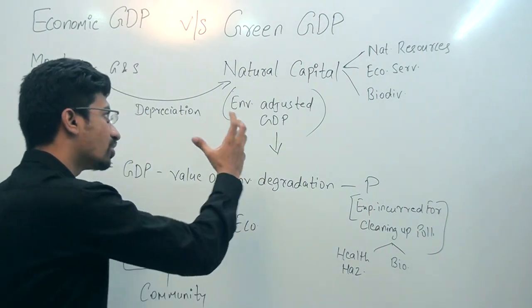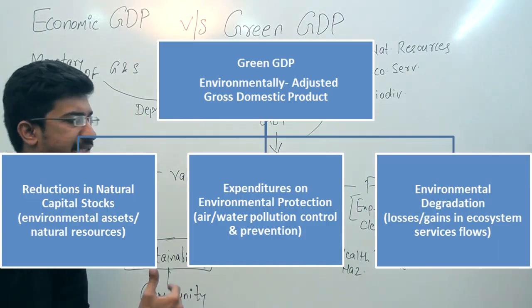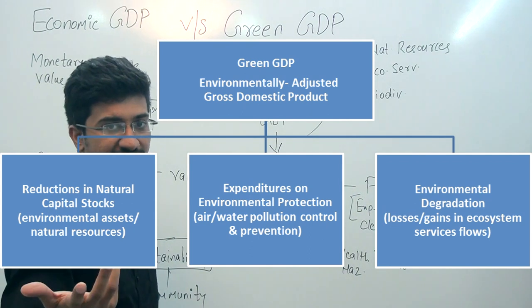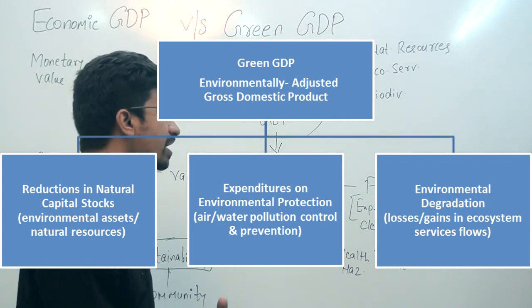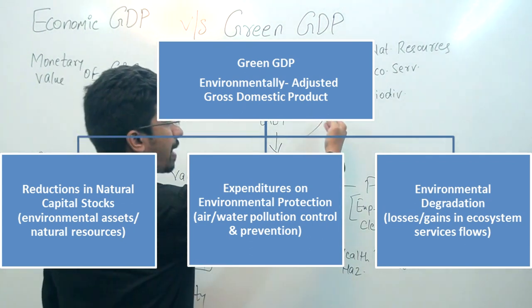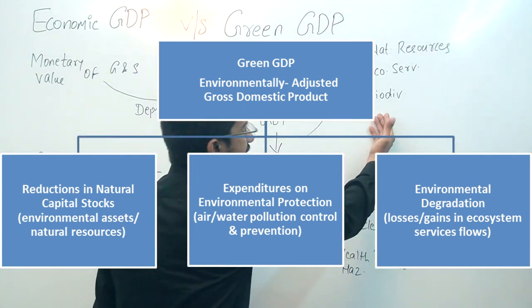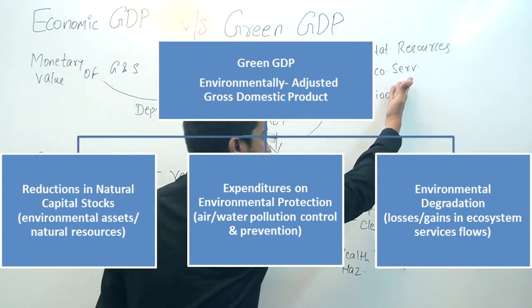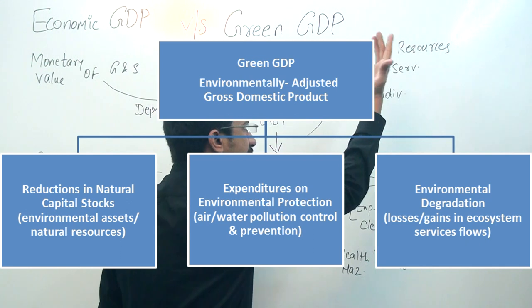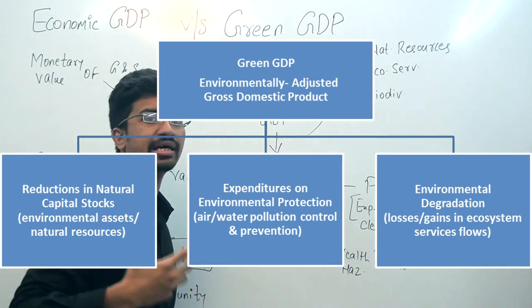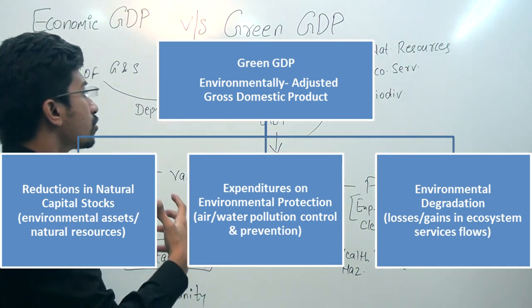So what is natural capital? Natural capital includes biodiversity, ecosystem services, and natural resources. These are the components that constitute natural capital.